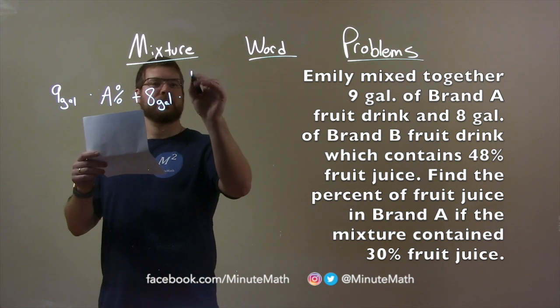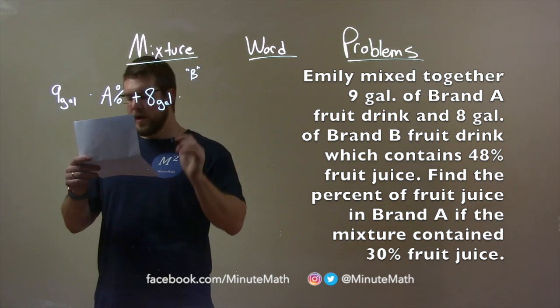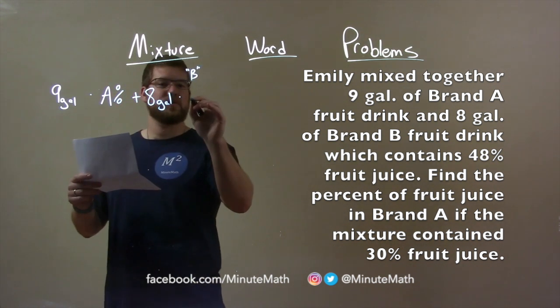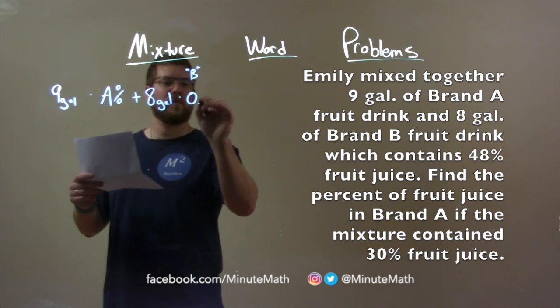so there's a little Brand B here, but Brand B, they said, was 48% juice. So, that is a decimal of 0.48.